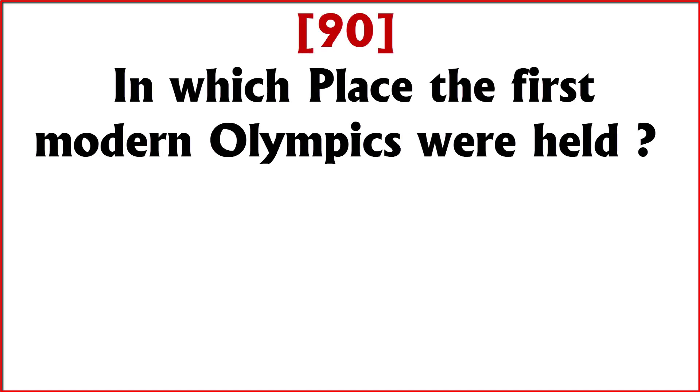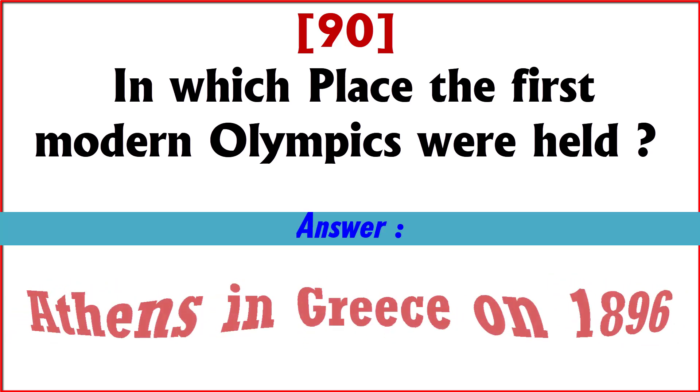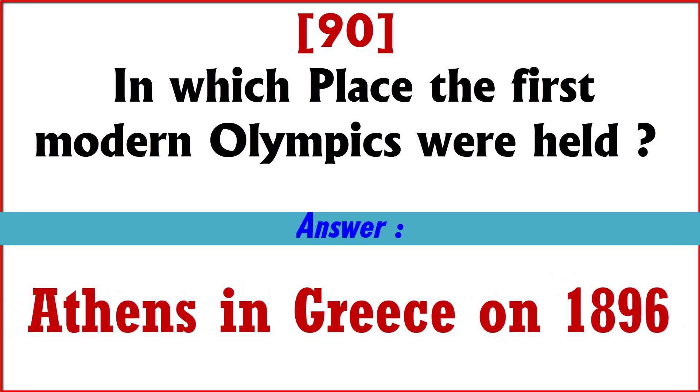In which place were the first modern Olympics held? Answer: Athens, Greece, in 1896.